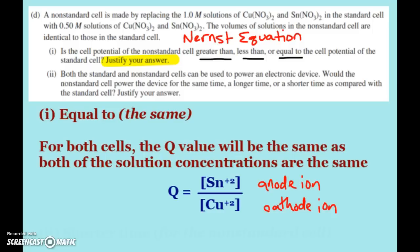What does change, though, is when there's less concentrated solutions, we're not going to have this cell running as long. And so that's what this says. Both the standard and non-standard cells can be used to power an electronic device. Would the non-standard cell power the device for the same time, longer time, or shorter time, compared to the standard cell? And again, please justify your answer.